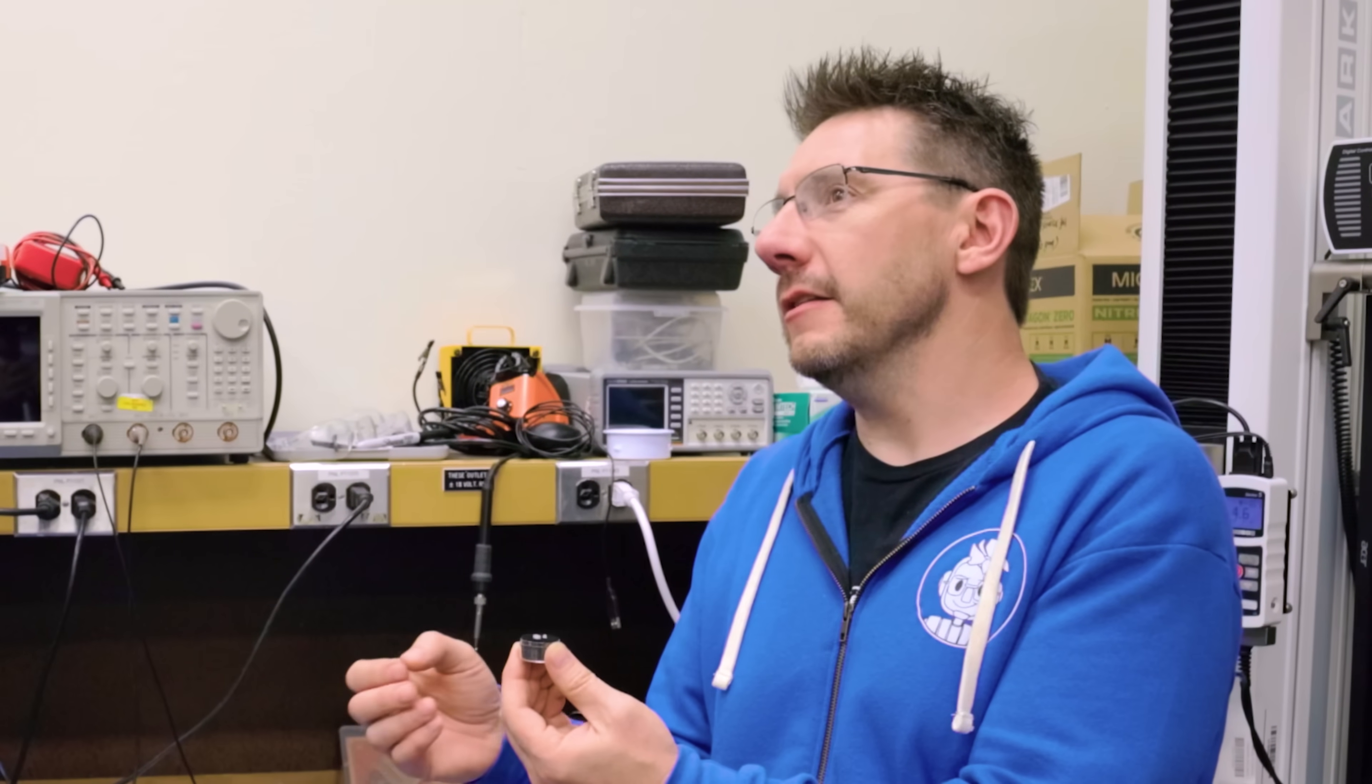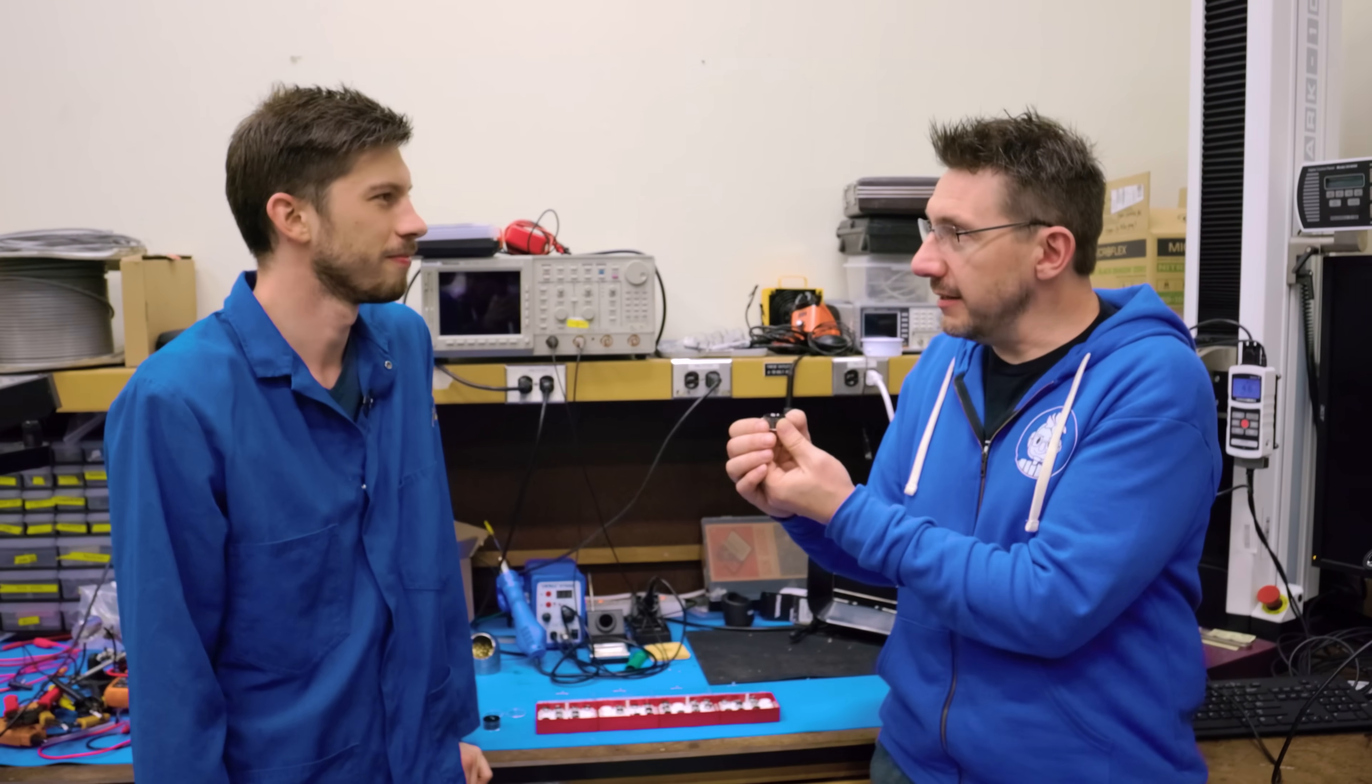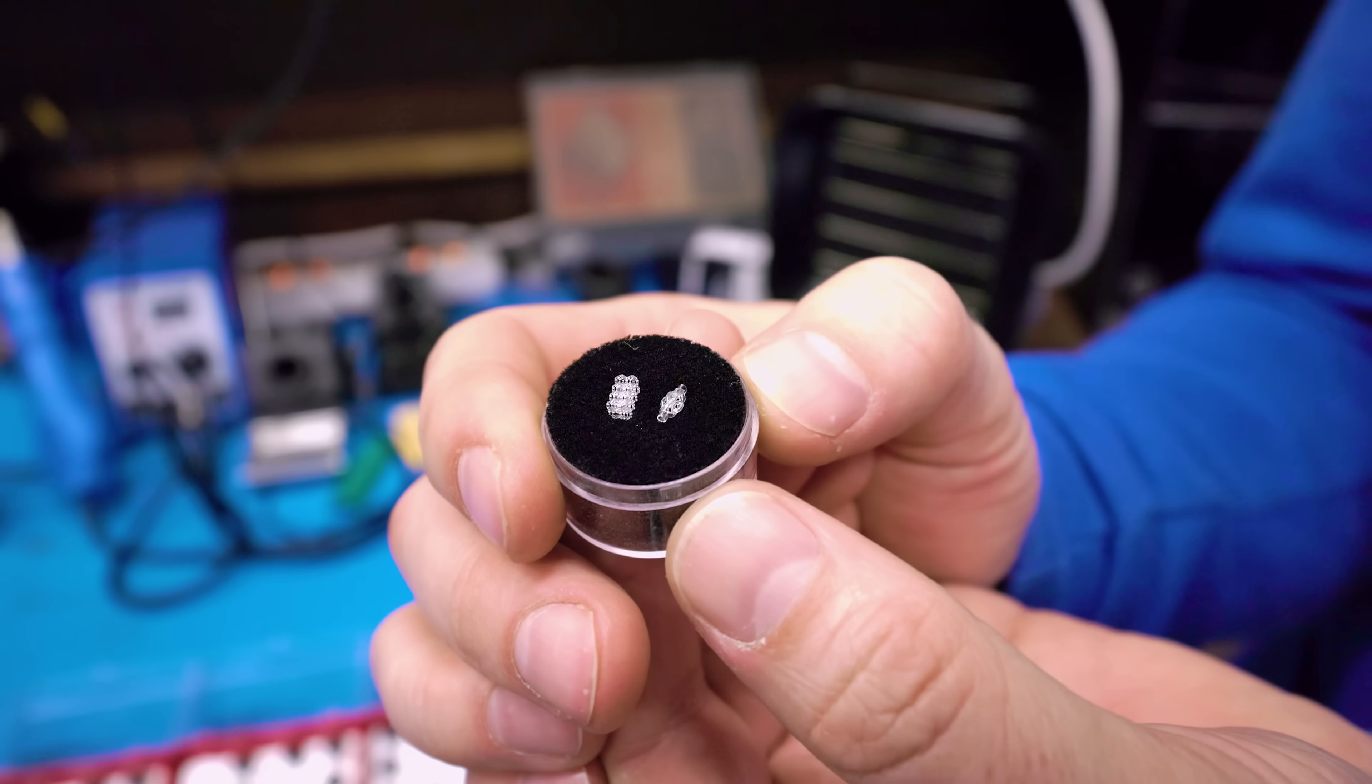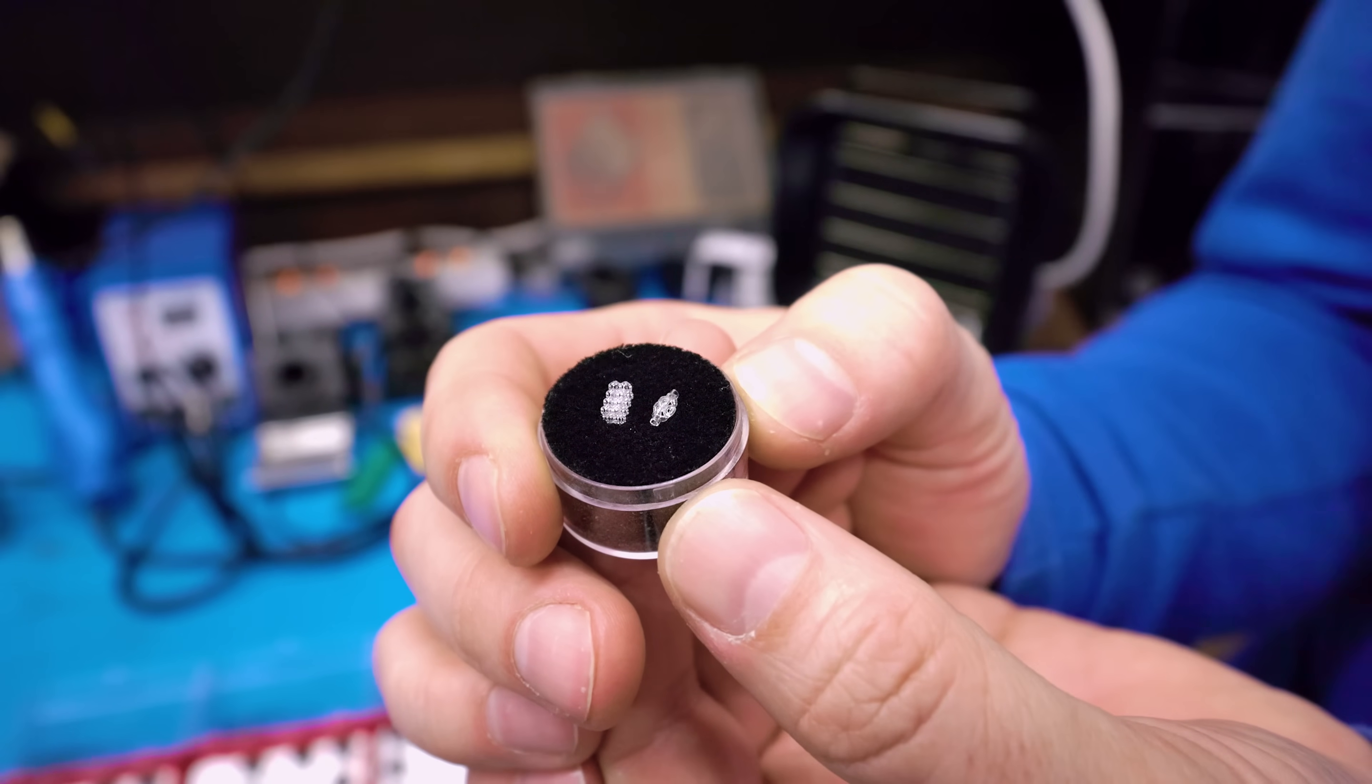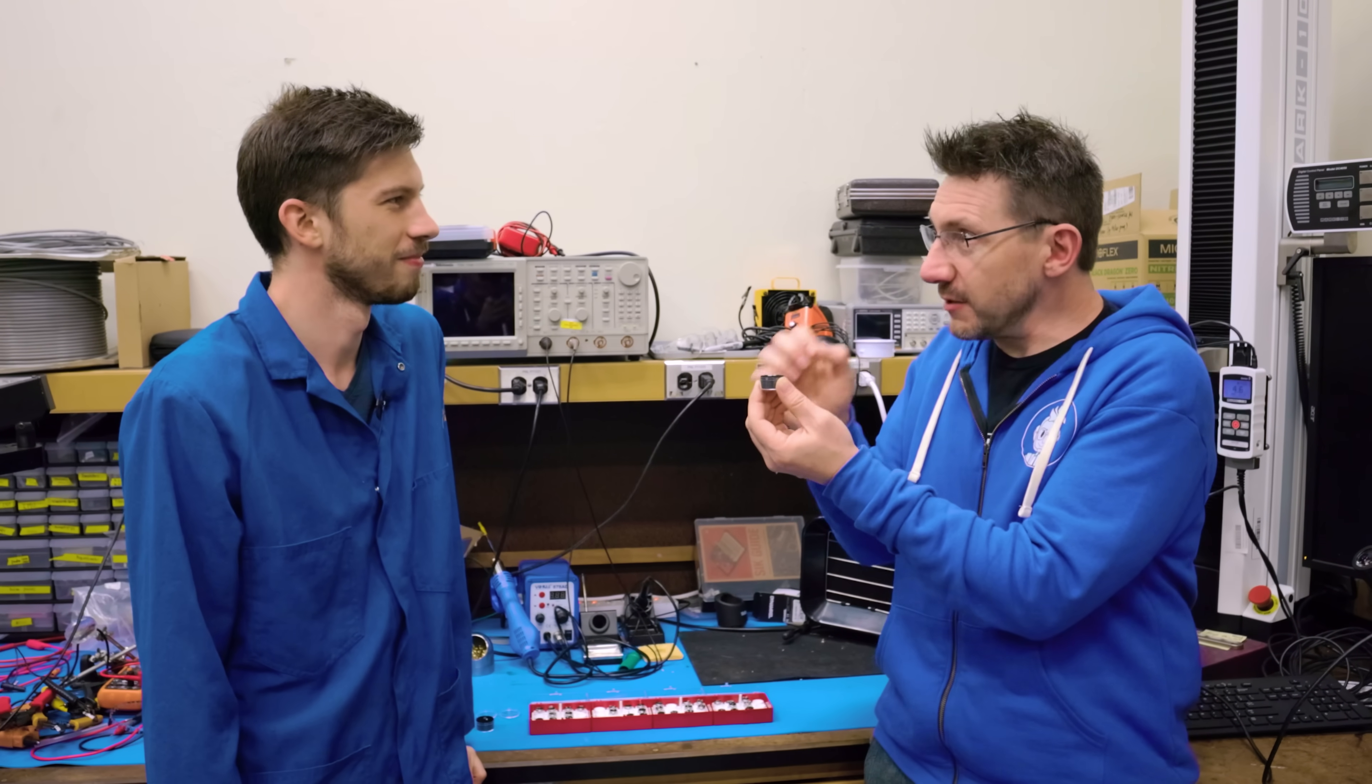How is this possible? Because when I've seen this CAL process, computed axial lithography, it's not as precise as this. This is a level of precision that I have yet to really experience or be told how it works. How do you get it this small, but this precise?